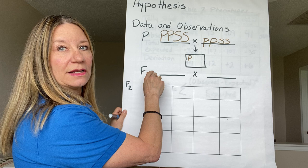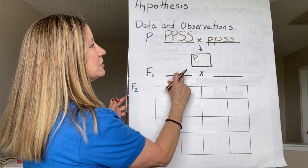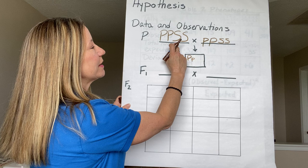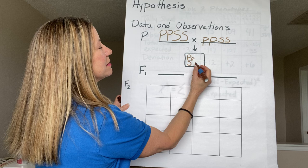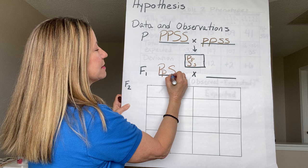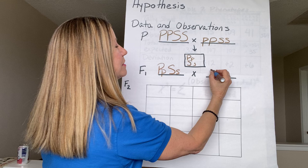As you can see from these two parents, the only gene that this parent can pass is the capital P for purple. The only gene that this parent can pass is a little p for yellow. For smooth and wrinkled, the only thing that this parent can pass is a capital S for smooth, and the only thing this parent can pass is a small s for wrinkled.